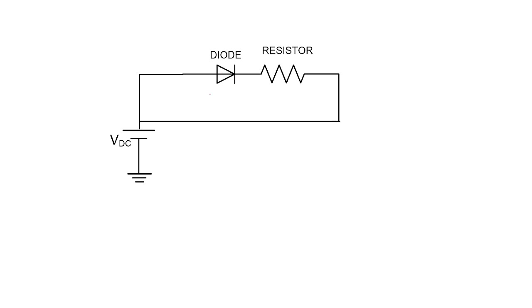After discussing the voltage drops, he removed one branch and reconnected the circuit differently. Now the circuit was complete, so current would flow. He asked the same questions again: what is the voltage drop across the diode and across the resistor? Then he asked: if the diode is non-ideal, what is the expression for current in the circuit?